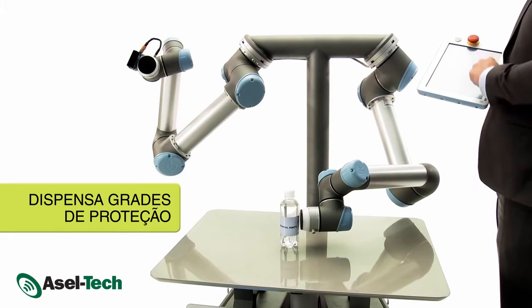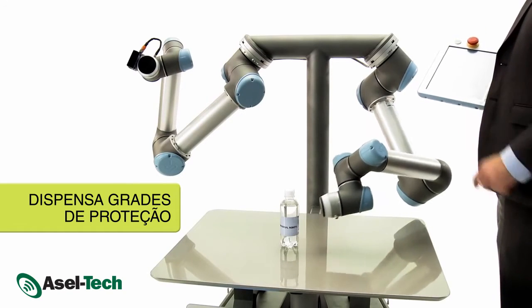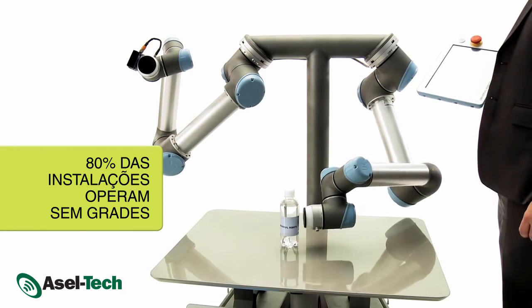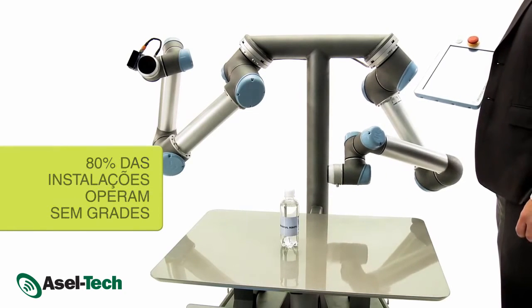This enables you to integrate the robot right into your production, with no need for safety guarding. 80% of current Universal Robots applications operate with no shielding.